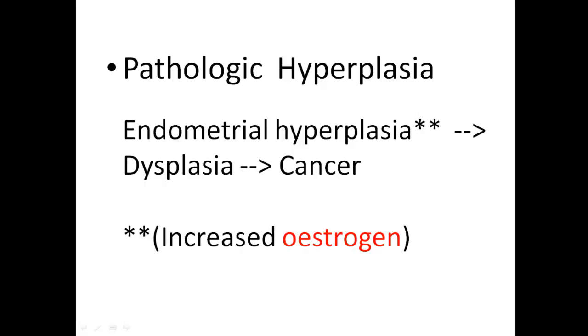What we call benign prostatic hyperplasia, BPH—it is hyperplasia because the prostate increases in size by dividing individual cells. It is not hypertrophic, it is hyperplasia. And this BPH is an exception to pathologic hyperplasia because although it is a hormone-mediated process, it still does not lead to dysplasia or increased risk of cancer.